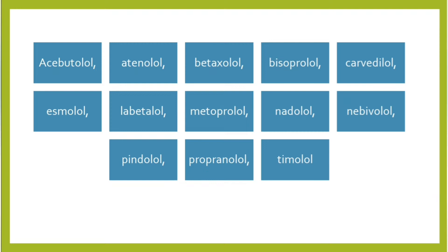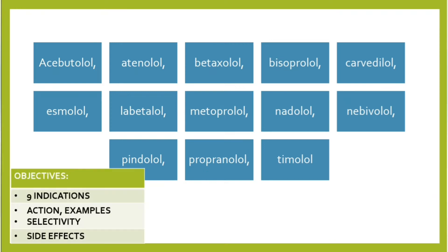As you can see, these drugs end with the suffix '-olol'. In this video we're going to talk about nine main indications in alphabetical order, the mechanism of action, and examples. In some indications we'll also talk about selectivity, because we have different beta receptors: beta-1, beta-2, and beta-3. Some drugs are non-selective and some have more beta-1 activity.